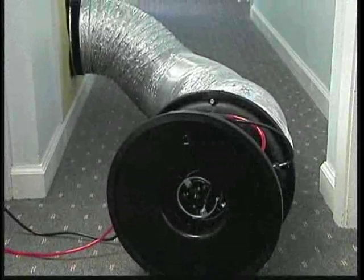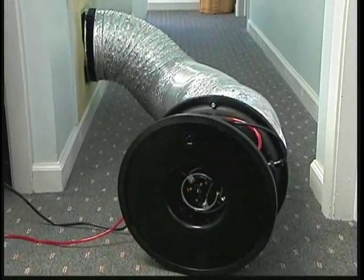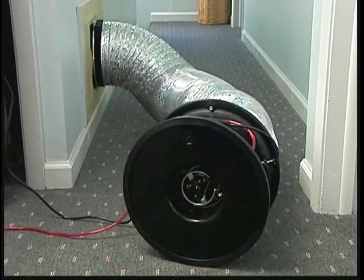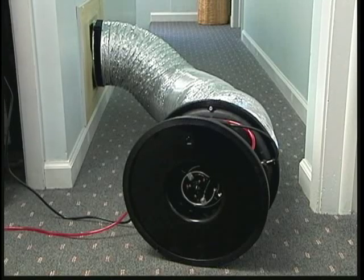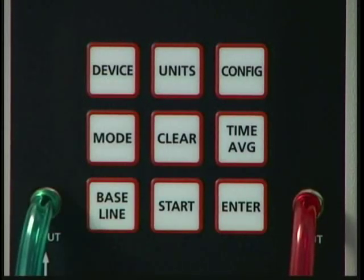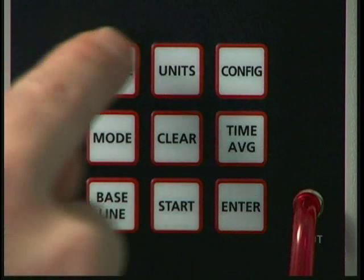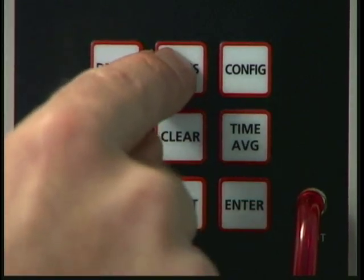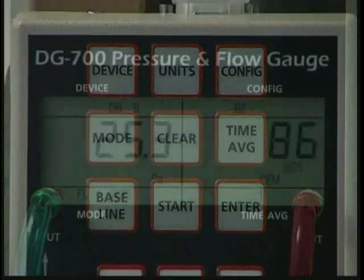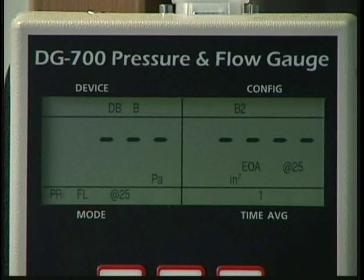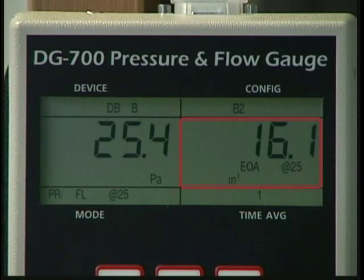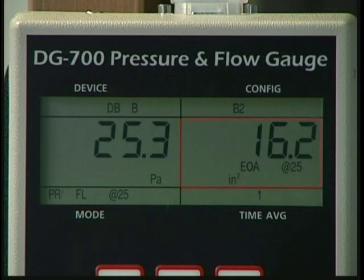Once you've determined the total leakage rate for the duct system, you can now estimate the leakage area of the duct system in square inches. This is done by pressing the units button three times while the DuckBlaster system continues to operate. In this demonstration, the gauge indicates that the duct system has a leakage area of approximately 16 square inches. The leakage area is a useful way to visualize the physical size of all the leaks in the duct system being tested.